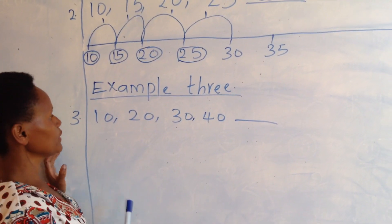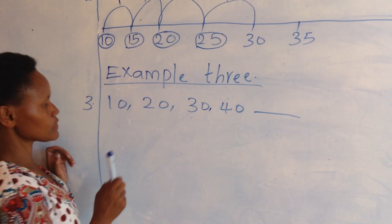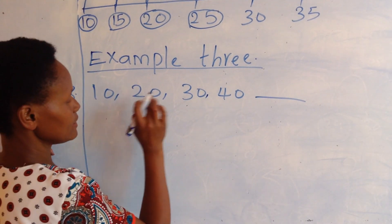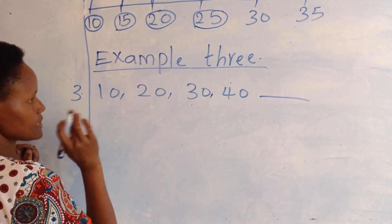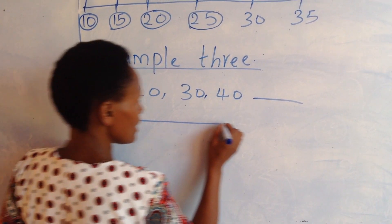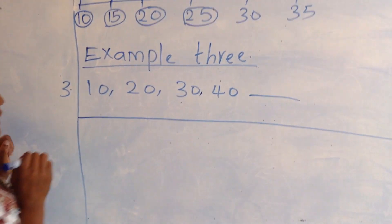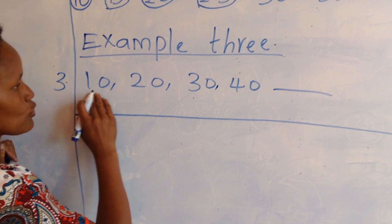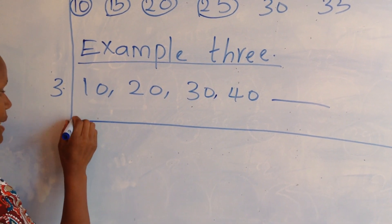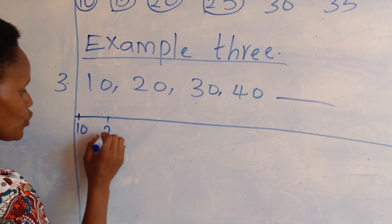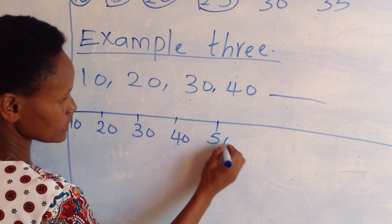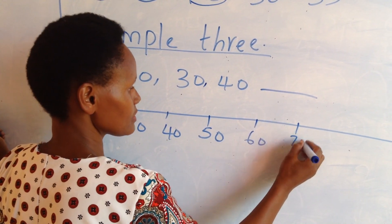Example 3 — we are going to count in steps of 10. My numbers are 10, 20, 30, 40. To find the next number, we have to use a number line. The smallest number is 10, so my number line starts from 10: 20, 30, 40, 50, 60, 70.